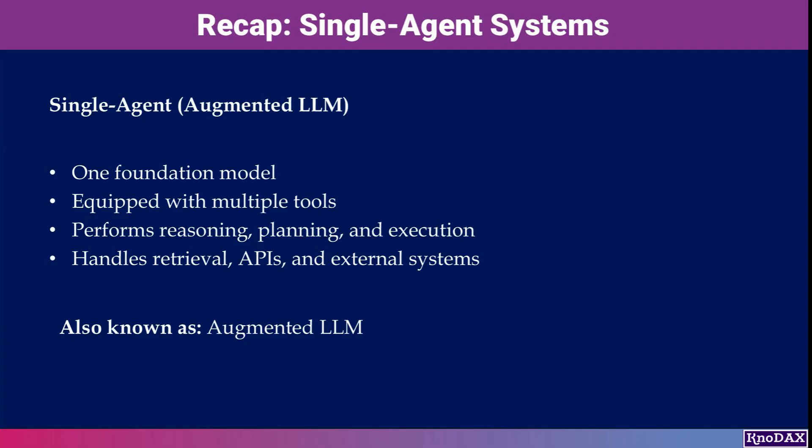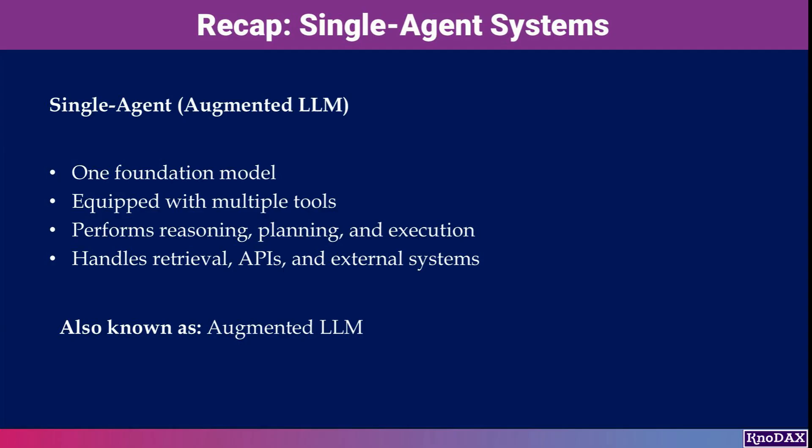Let's quickly recap a single-agent system. It typically consists of one foundation model augmented with tools. That agent can retrieve data, call APIs, and interact with external systems. This setup works well for many tasks, and it's often called an augmented LLM.